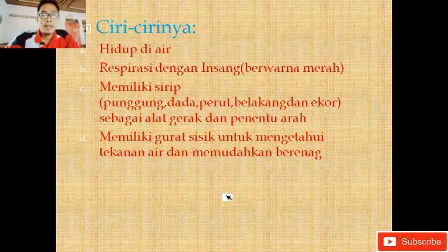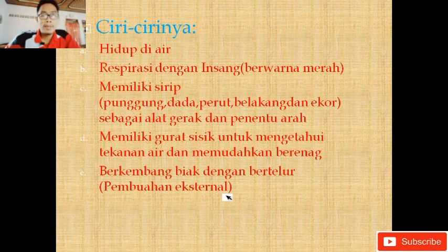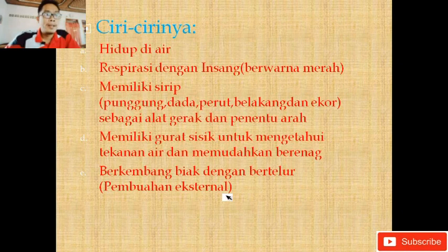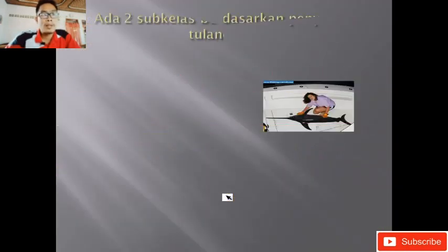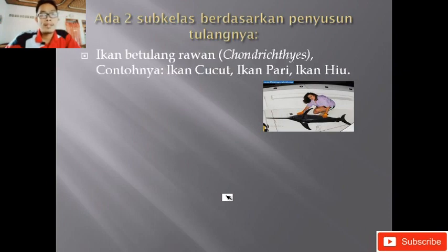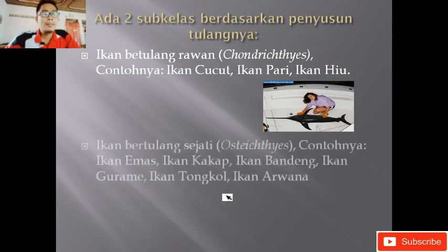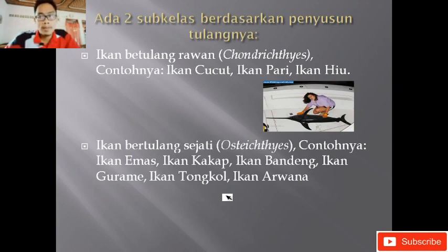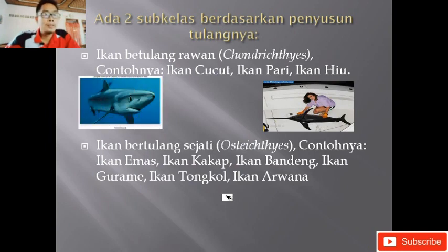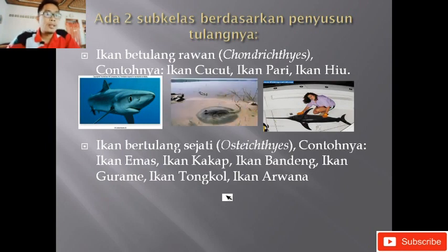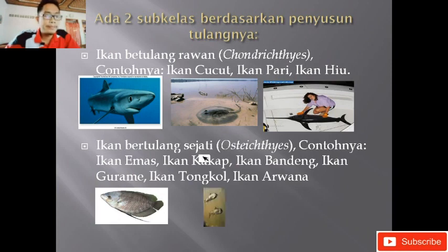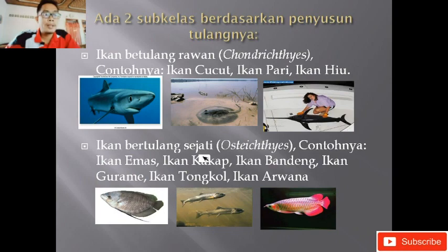Pisces berkembang biak dengan cara bertelur dengan pembuahan secara eksternal, jadi pertemuan antara sel kelamin jantan dan sel kelamin betina terjadi di luar, bukan di dalam. Ada dua sub-kelas berdasarkan penyusun tulangnya. Pertama, ikan bertulang rawan atau Chondrichthyes, seperti ikan cucut, ikan pari, dan ikan hiu. Kedua, ikan bertulang sejati atau Osteichthyes, contohnya ikan emas, kakap, bandeng, gurame, tongkol, dan arwana.